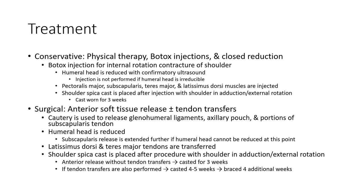Surgery is used to release the glenohumeral ligament, axillary pouch, and portion of subscapularis tendon. The humeral head is then relocated. Subscapularis release to the tendon is performed if the humeral head cannot be relocated. Latissimus dorsi, teres major tendon transfer may also be performed.